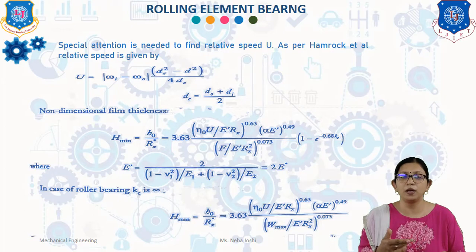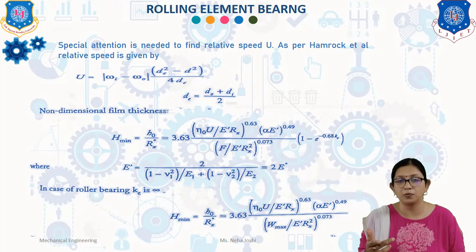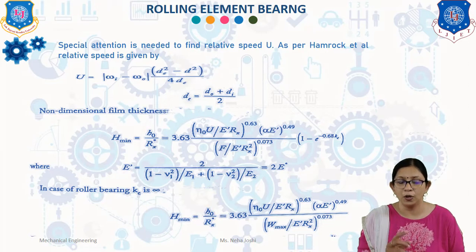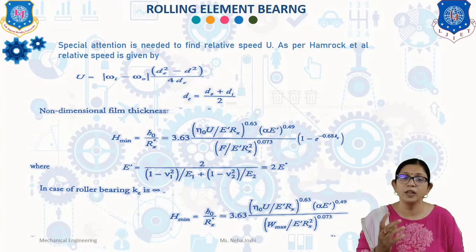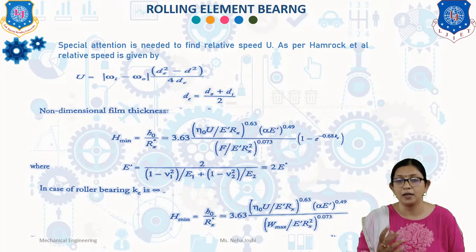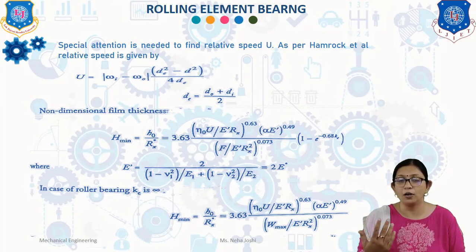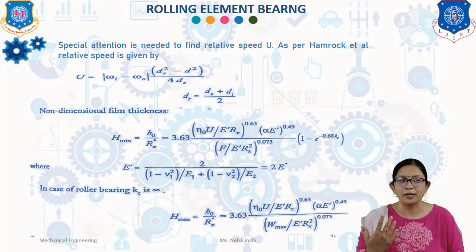We have previously discussed E' in our previous video. In the case of rolling bearing, K is infinite. So H_min = h_o / R_x = 3.63 · (E^τ · U / (E'·R_x))^0.63 · (α·η)^0.45 / (W_max / (E'·R_x²))^0.073.